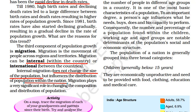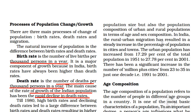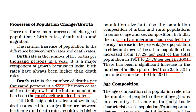Migration plays a significant role in changing the composition and distribution of population. As countries develop, rural population decreases and urban population increases. India has seen a steady increase in the percentage of urban population. The urban population was 17.29% in 1951 and increased to 27.78% by the 2001 census. There has also been a significant increase in million-plus cities — cities with population over one million — which was 23 in 1991 and grew to 35 by 2001, showing how people are migrating to urban areas.